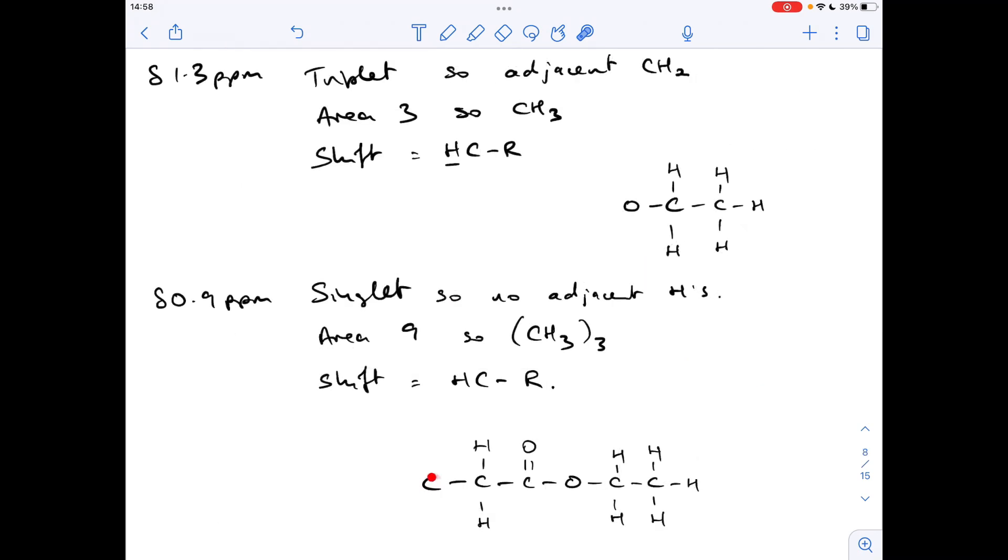So we're obviously talking about what's bonded to this carbon here. So what we've established from what we've just said is that there are CH3 groups off this carbon, and they would appear as a singlet because they're too far away to be split by those. And they would have an area of 9 and they would appear in the HCR environment. So that is the structure of the ester.